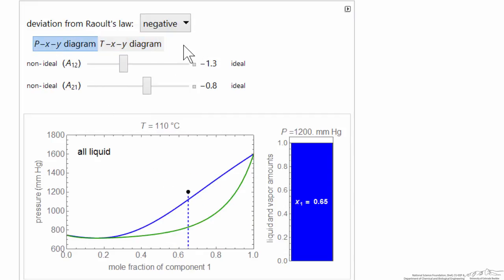Negative deviations refer to the pressure XY plot as negative deviation from Raoult's law. Again I can move the dot around in the two phase region to see the distribution between liquid and vapor.